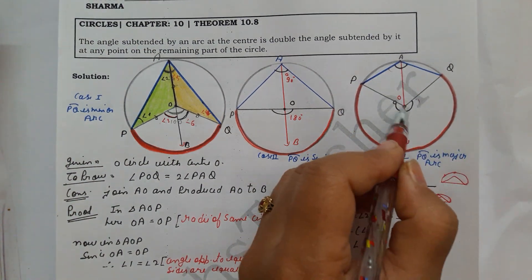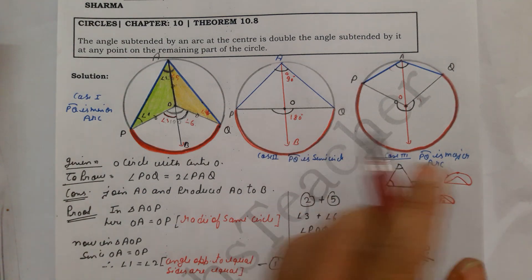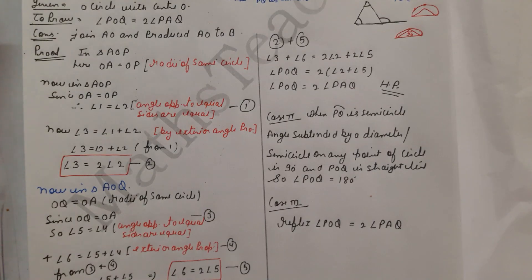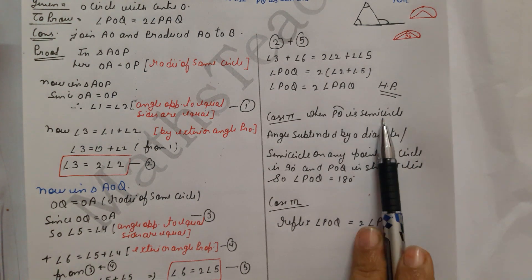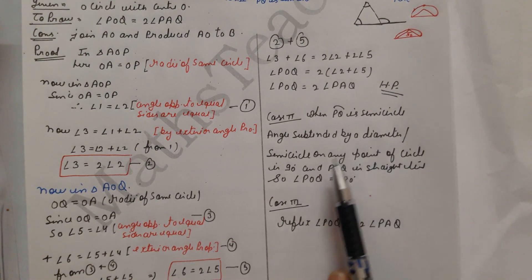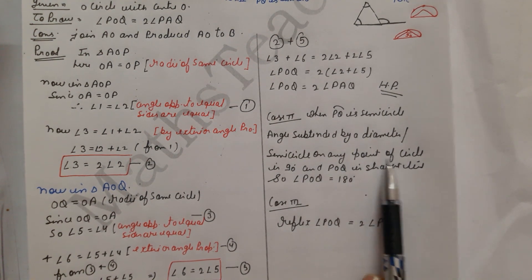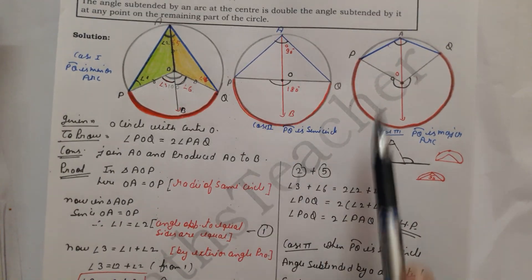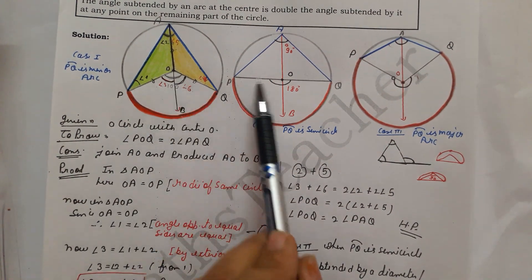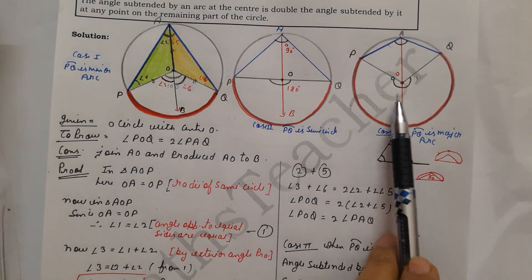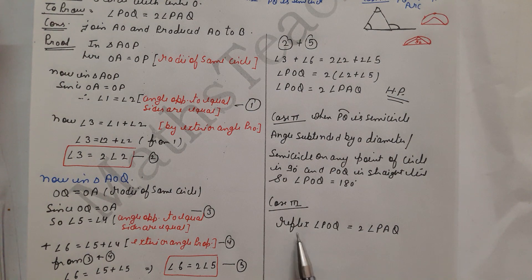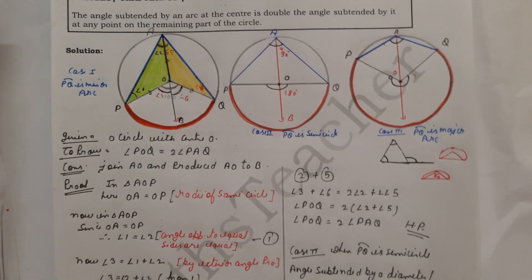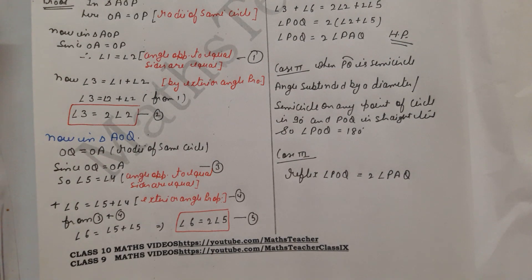For case 3, this angle POQ is our reflex angle because it is a big angle. For case 2, when PQ is a semicircle, angle POQ is a straight line so the angle is 180°. We can write case 2 and case 3 proofs similarly. I hope you have understood this theorem. If you have any doubt about this theorem, please comment in the box. Thank you.